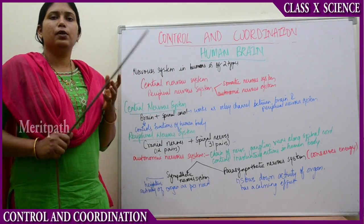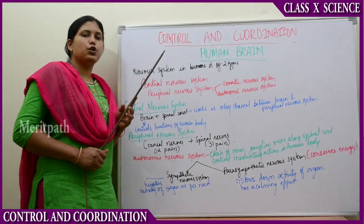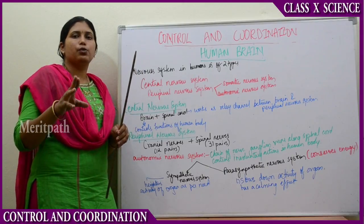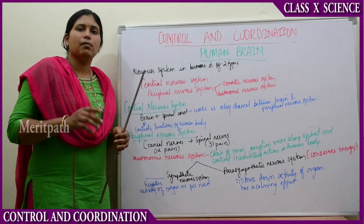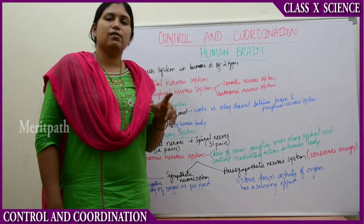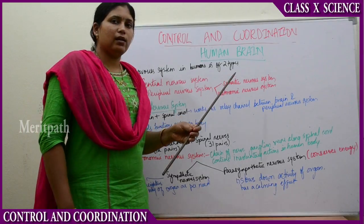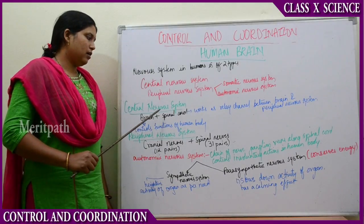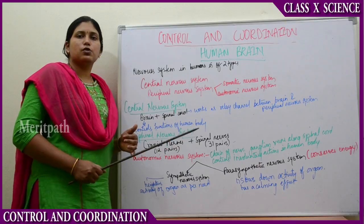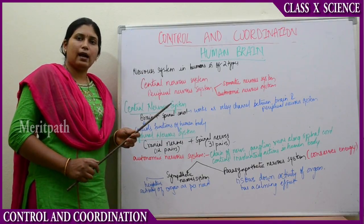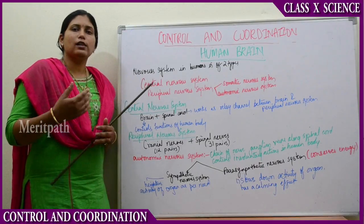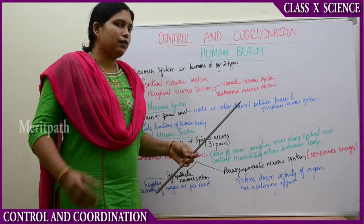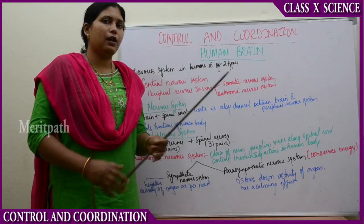Next, let's move on to the human nervous system. The first thing is the human brain. The nervous system in human beings is of two types: the central nervous system and the peripheral nervous system. The central nervous system consists of the brain and spinal cord together. The brain controls all the functions of the human body, and the spinal cord works as a relay channel between the brain and the peripheral nervous system.